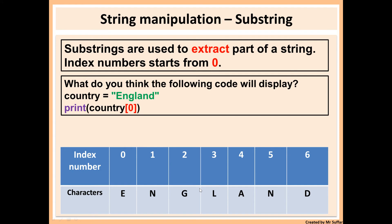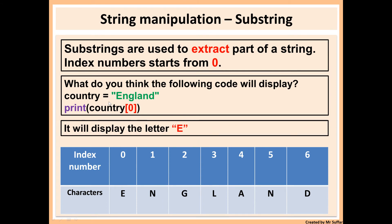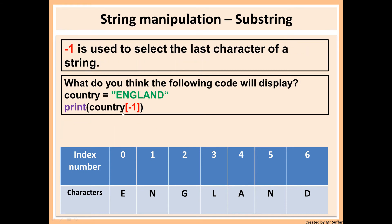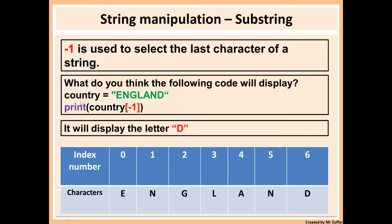Finally we have substrings, another type of string manipulation used to extract part of a string. Substring index numbers start with zero, as shown in the table at the bottom. So, country equals 'England' — print country[0] will display the letter E because E is at index zero. Minus one is used to select the last character. The last character of England is D, so print country[-1] will display the letter D.